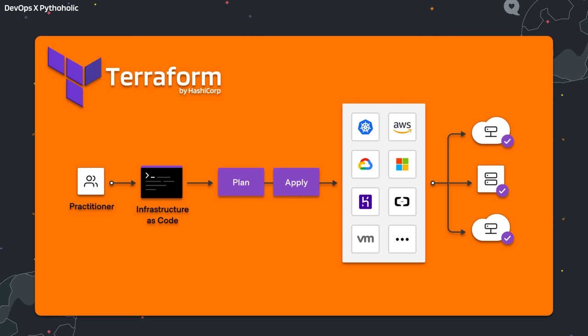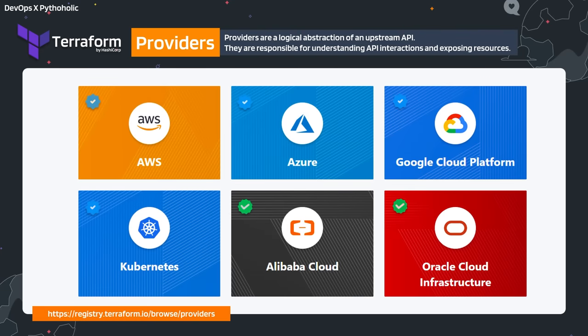You might wonder: how would Terraform know which environment and which cloud hosting you're working with? For that, Terraform provides integration with cloud service providers and on-premise hosting services such as AWS, Azure, Google Cloud, and orchestration tools such as Kubernetes. On Terraform, these are called providers, which are a logical abstraction of an upstream API. They are responsible for understanding API interactions and exposing resources.